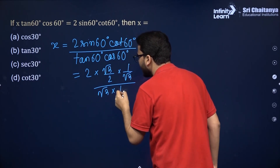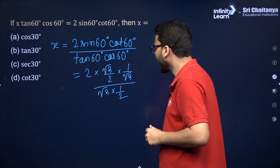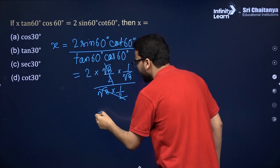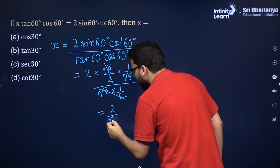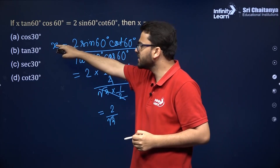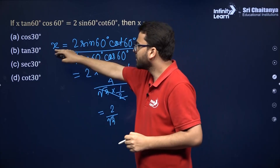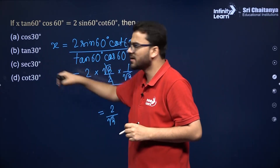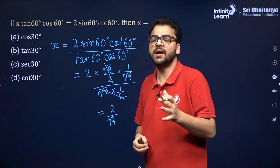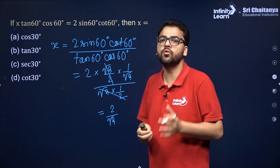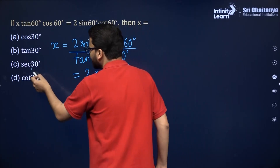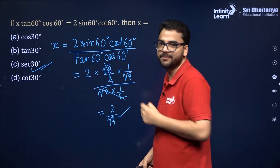Simplifying: √3/2 and 1/2 cancel with their counterparts, leaving 2/√3. Now cos 30 = sin 60 = √3/2, and sec 30 is the reciprocal of cos 30, which gives 2/√3. So the answer is sec 30, option C.